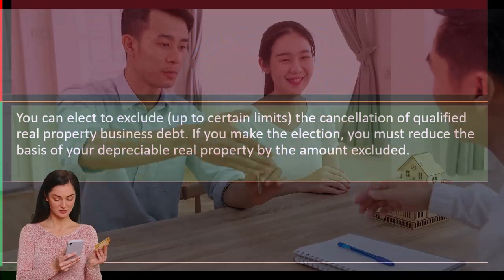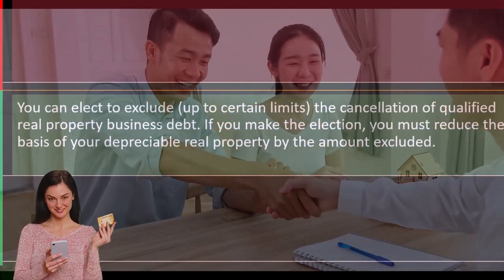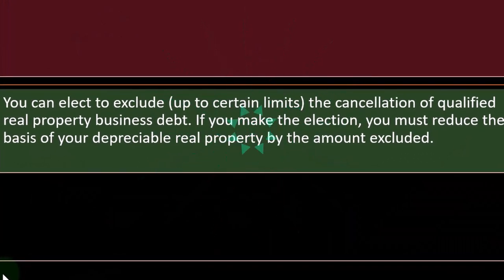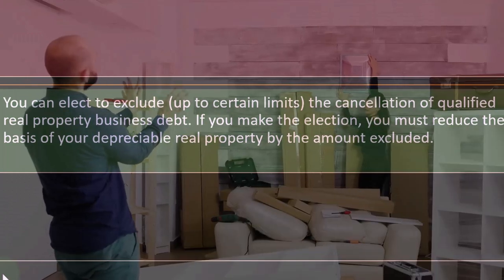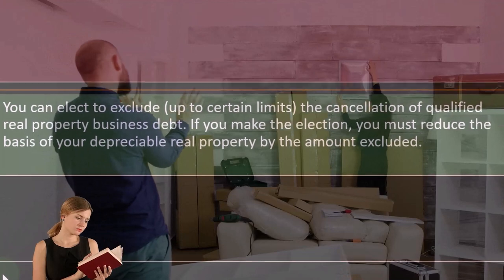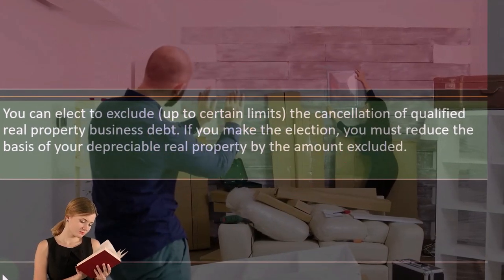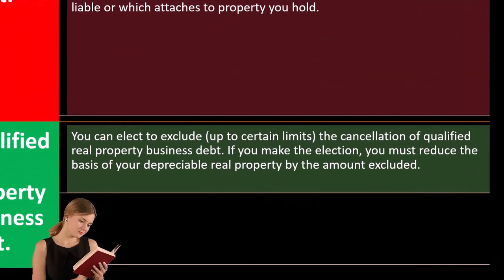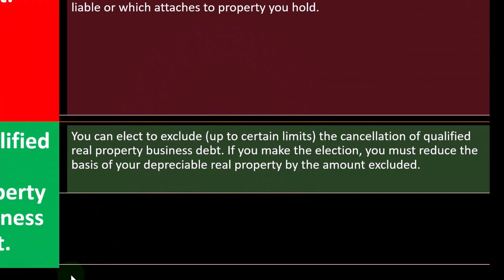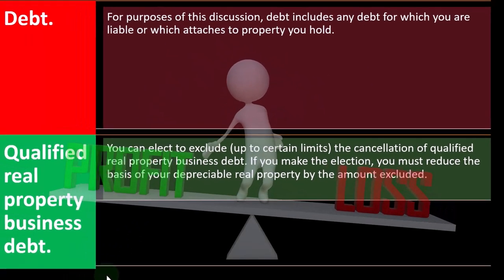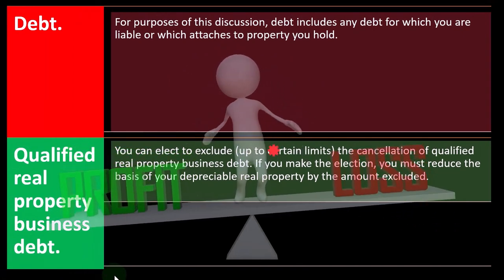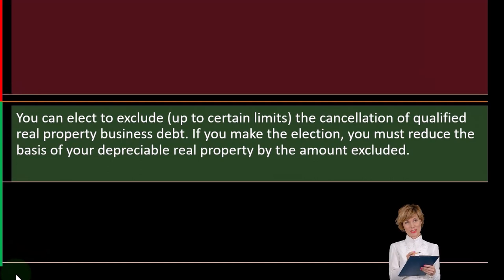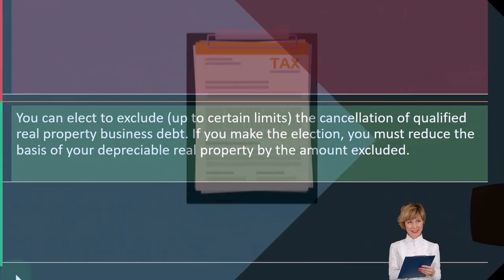There is an interplay with adjusted basis when dealing with real property. The adjusted basis includes cost, plus improvements, minus depreciation for business property. When you sell, the gain is the sale price minus the adjusted basis. You want as high an adjusted basis as possible to minimize the gain — or potentially have a loss. Reducing the basis defers the tax consequence: a lower basis means a higher gain and potentially more tax owed at the point of sale.